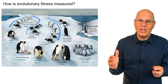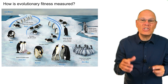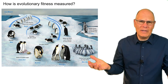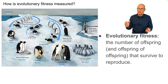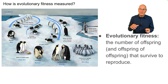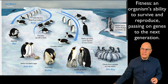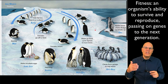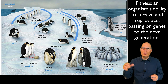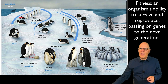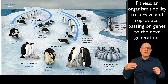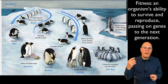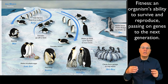Natural selection is often summarized as 'survival of the fittest.' Evolutionary fitness is not about strength or speed — it's the number of offspring and offspring of offspring that survive to reproduce. Using penguins as an example, fitness emerges at every level of the life cycle: when feeding, during the march inland, during breeding, and as juveniles huddling together. Fitness throughout the life cycle is what enables genes to be passed on to the next generation.